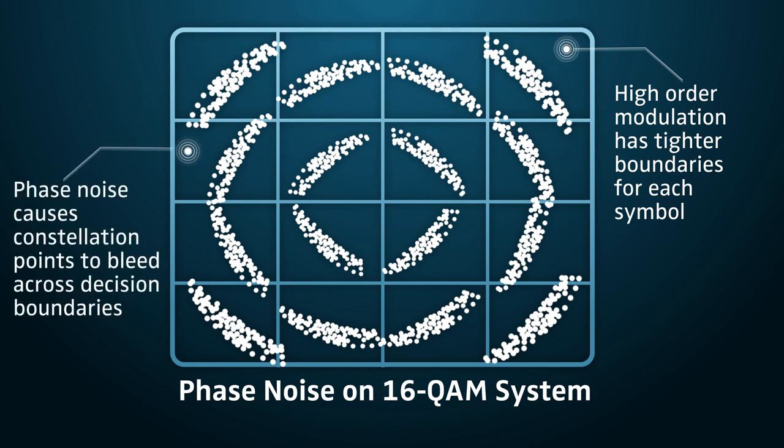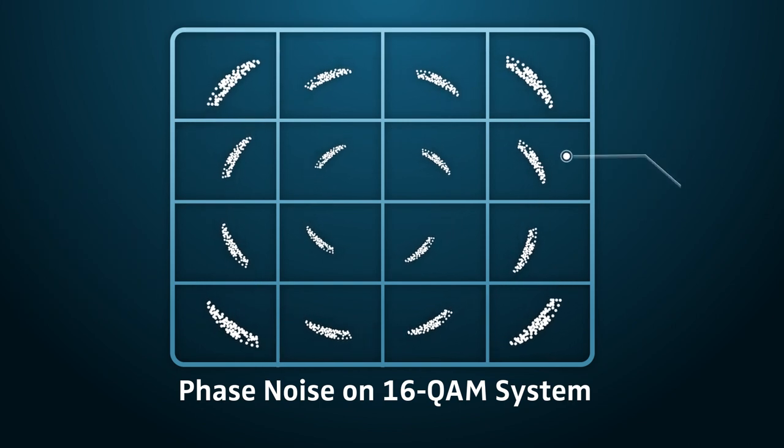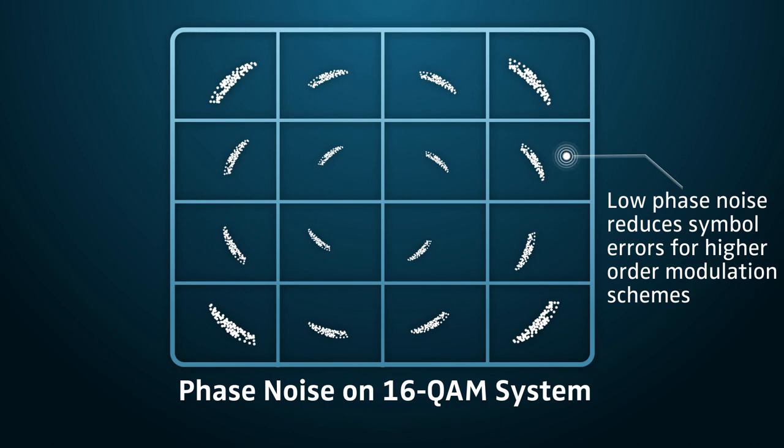The rotation caused by phase noise can cause symbols to cross into adjacent spaces. Although higher order schemes achieve higher data rates, they are more vulnerable to symbol errors caused by excessive phase noise.